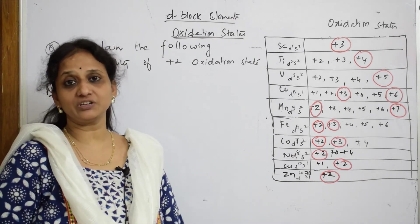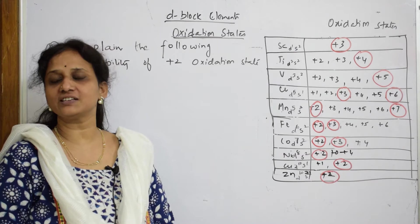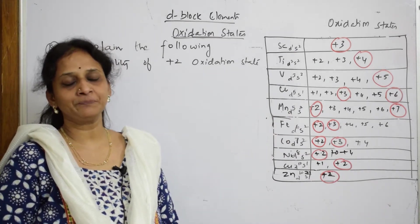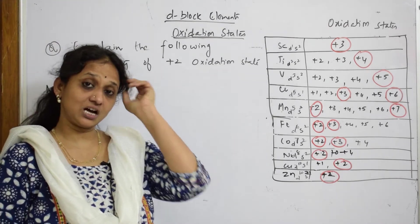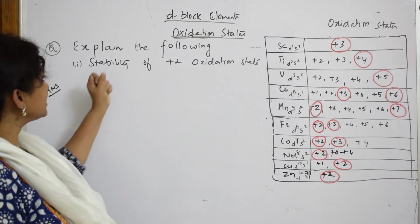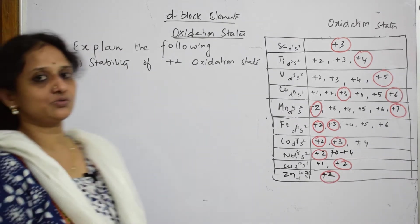4d and 5d are not given, but most of the questions will be asked from 3d series only. Let us see this question, how to answer and how to put it in bullets. What do they ask us? Explain the following: stability of +2 oxidation state.